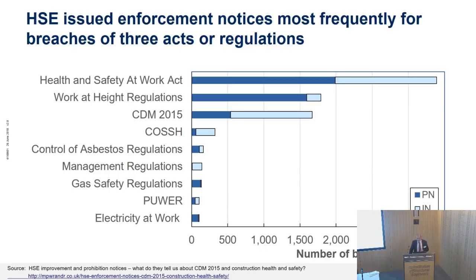About half the number of CDM notices compared to the Health and Safety at Work Act. What's also interesting is the ratio of prohibition notices to improvement notices on the work at height regulations. Most of the breaches seen on site will involve the work being stopped immediately with a prohibition notice, because the risk is viewed as so high.